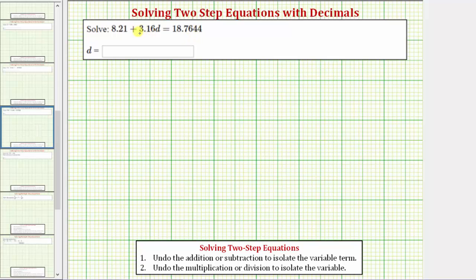We want to solve the given equation and because 3.16d means 3.16 times d, the solution is a value of d that makes 8.21 plus 3.16 times d equal to 18.7644.